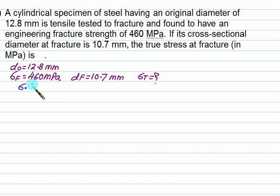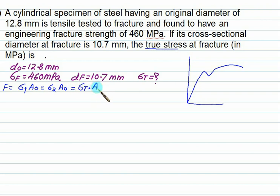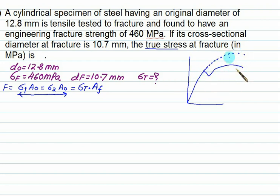For the engineering curve, stress multiplied by original area is always constant — sigma × A₀ remains the same throughout. The area A₀ is constant while stress varies. That is why we never account for the actual diameter of the neck in the engineering curve. But for the true stress curve, we consider changes in diameter — the force remains the same, but the area changes, so true stress also changes.